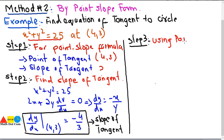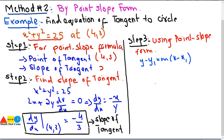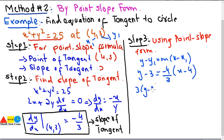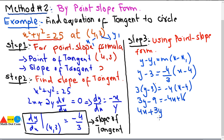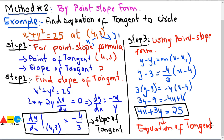We put the values of the point and slope into the point-slope formula. The point-slope formula is: y - y₁ = m(x - x₁), where y₁ and x₁ are the coordinates of the point and m is the slope. Substituting, y - 3 = (-4/3)(x - 4). Multiplying through: 3(y - 3) = -4(x - 4), so 3y - 9 = -4x + 16. Rearranging, we get 4x + 3y = 25. This is the equation of the tangent to the circle.